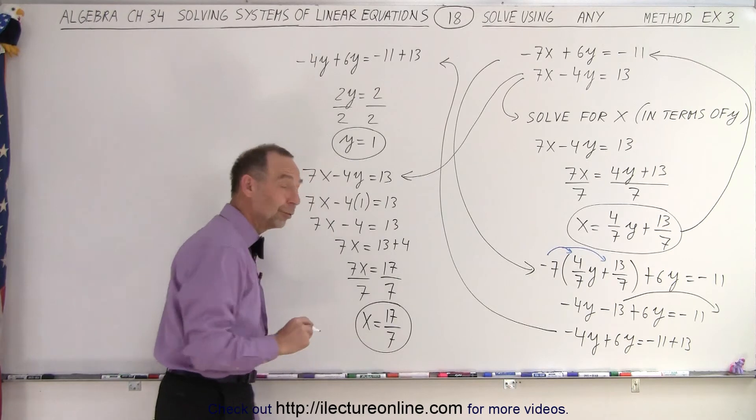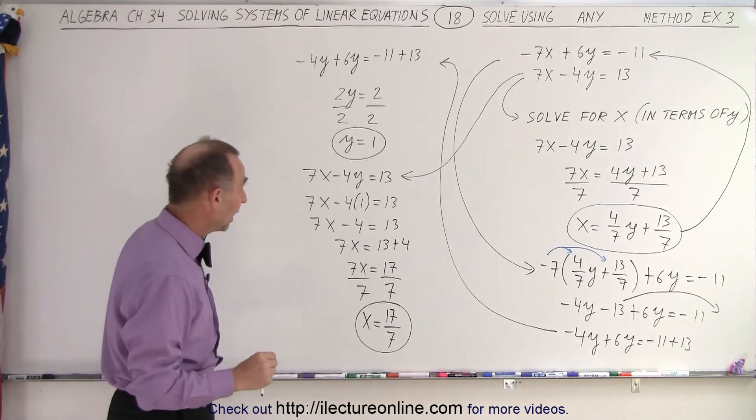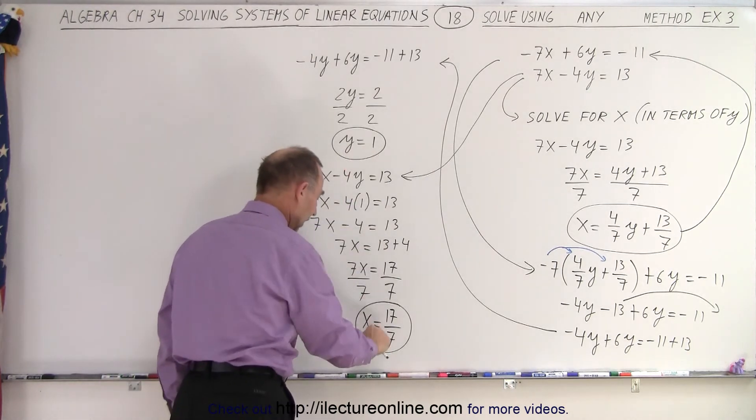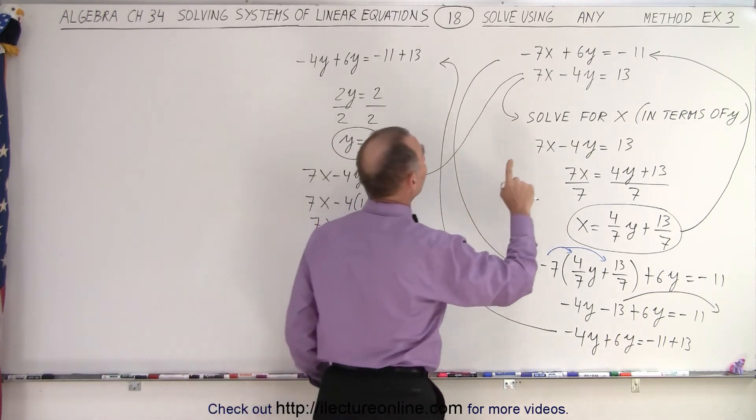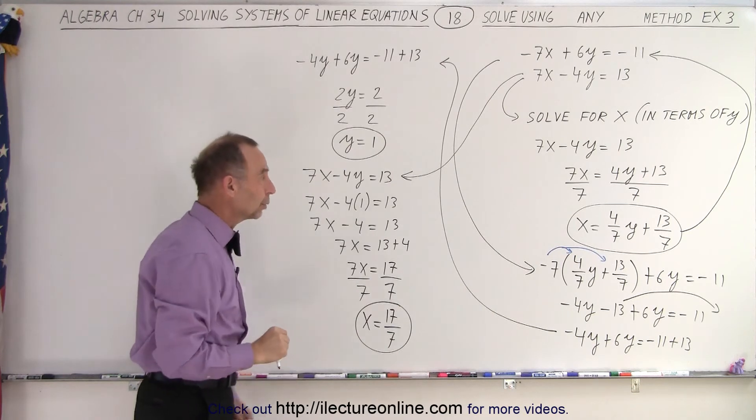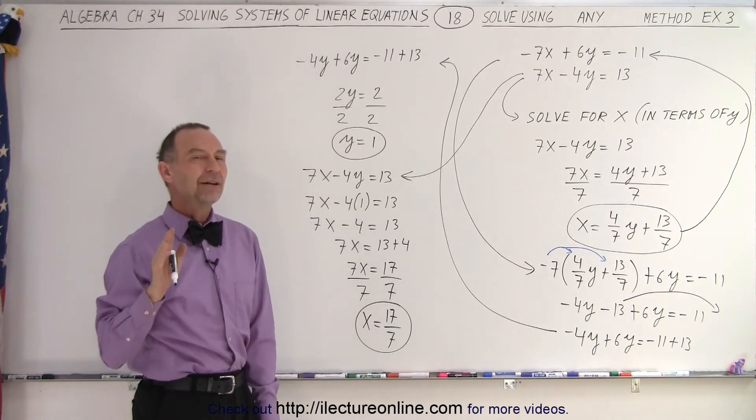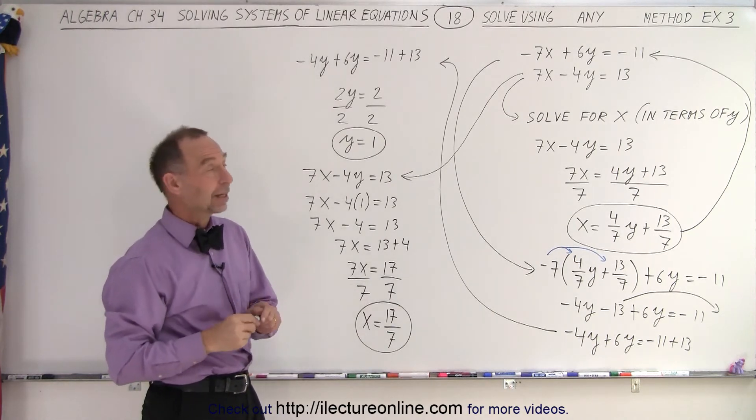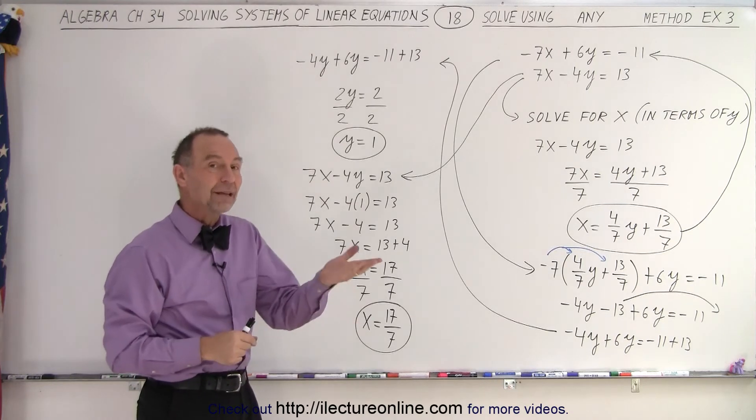Now what would I do to make sure that that was done correctly? I would take y equals 1, x equals 17 over 7, and plug it back into the other equation, the top equation, to see if I get the left side equal to the right side. But instead of doing that, another way to check is to do the same problem using a different method.